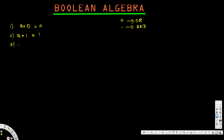Now let's look at a + ā. The bar means complement — the opposite. If a is one, ā is zero; if a is zero, ā is one. In either case one of them is one, so in the OR gate the result is definitely one. Therefore a + ā = 1.